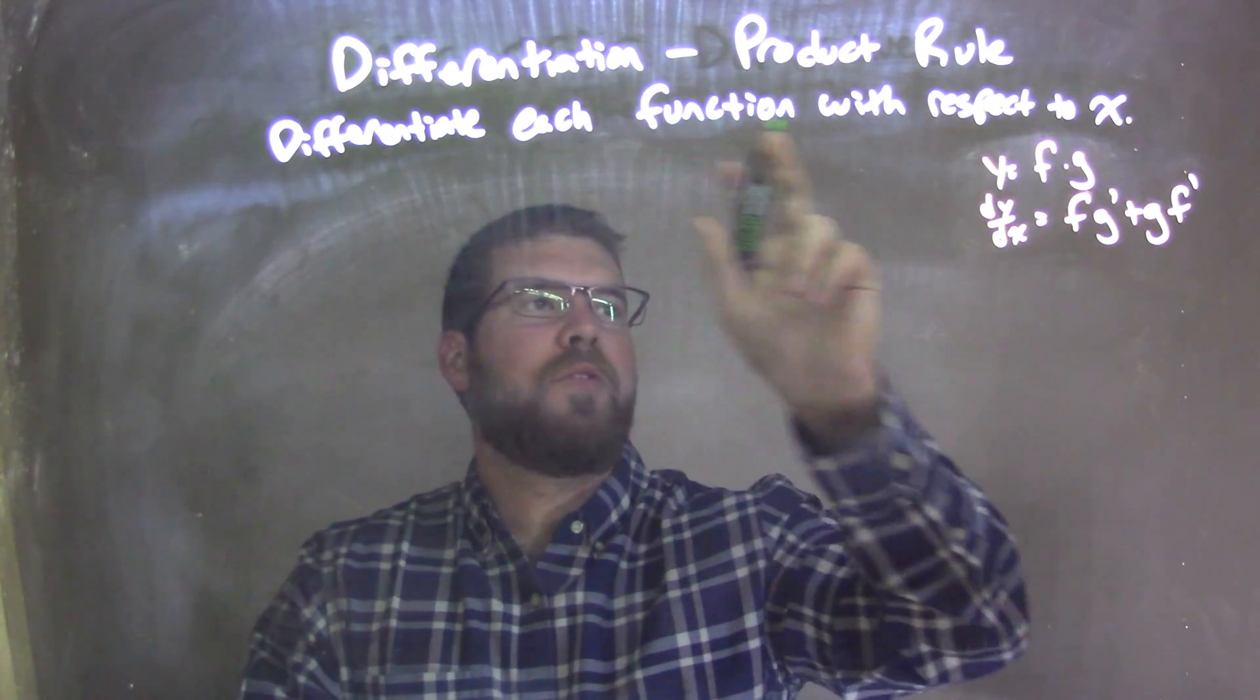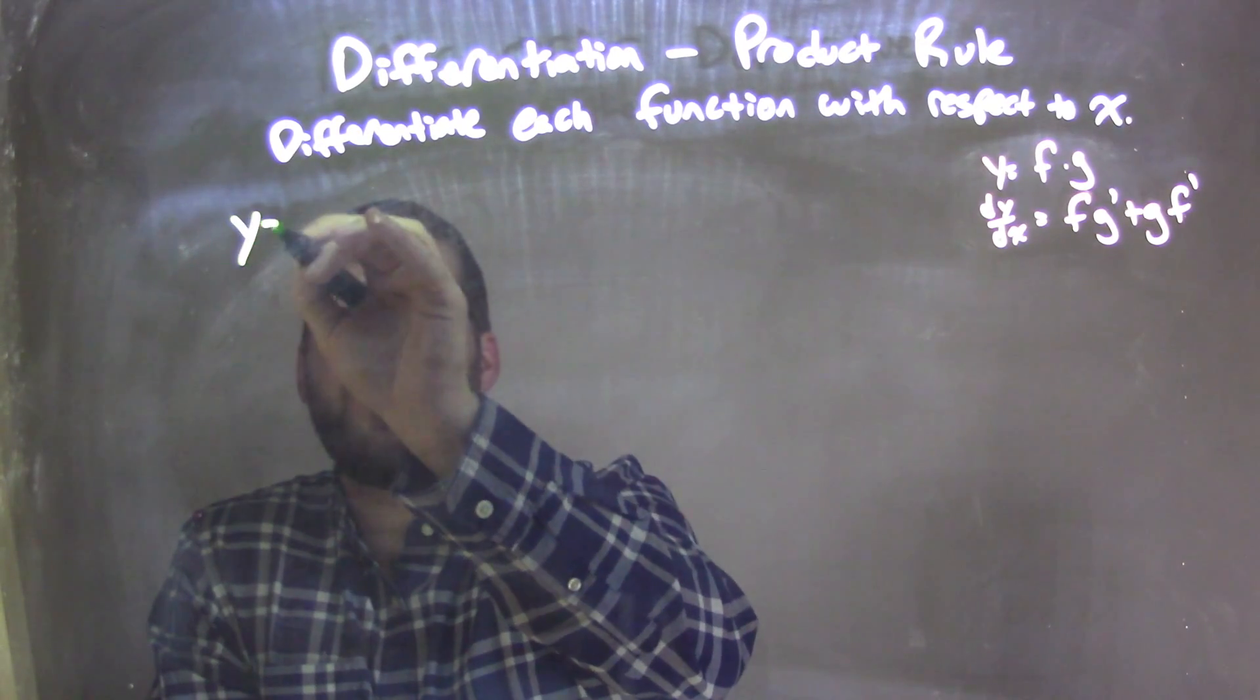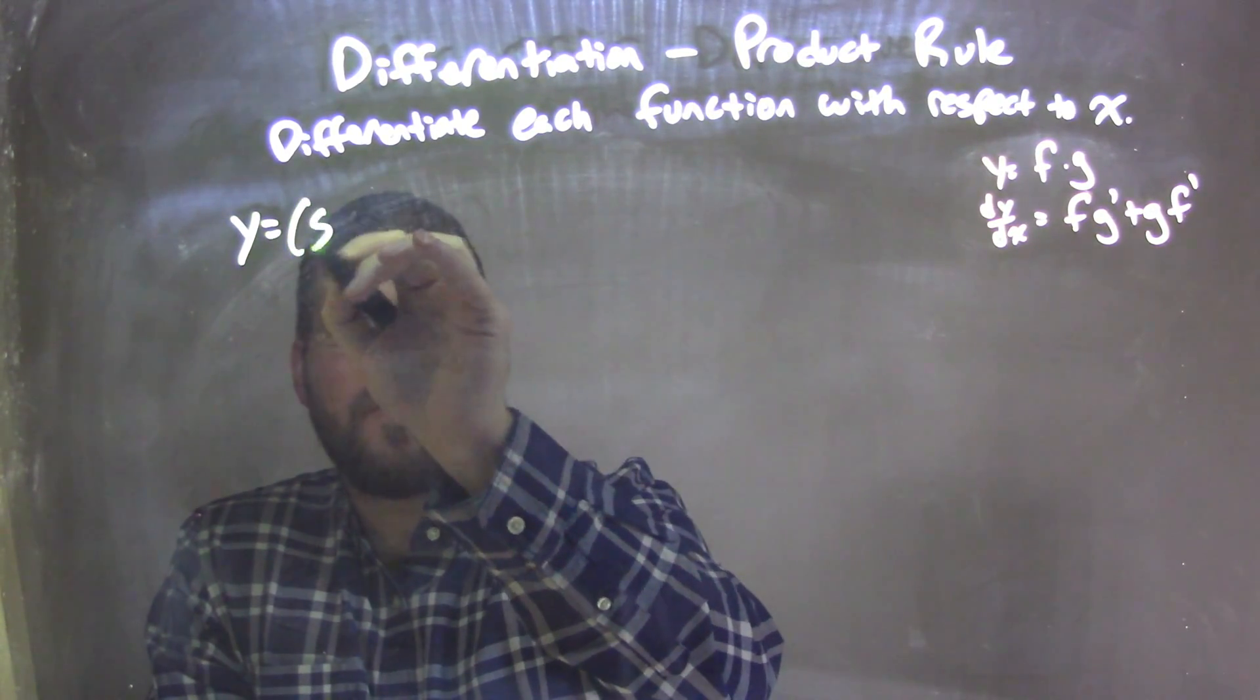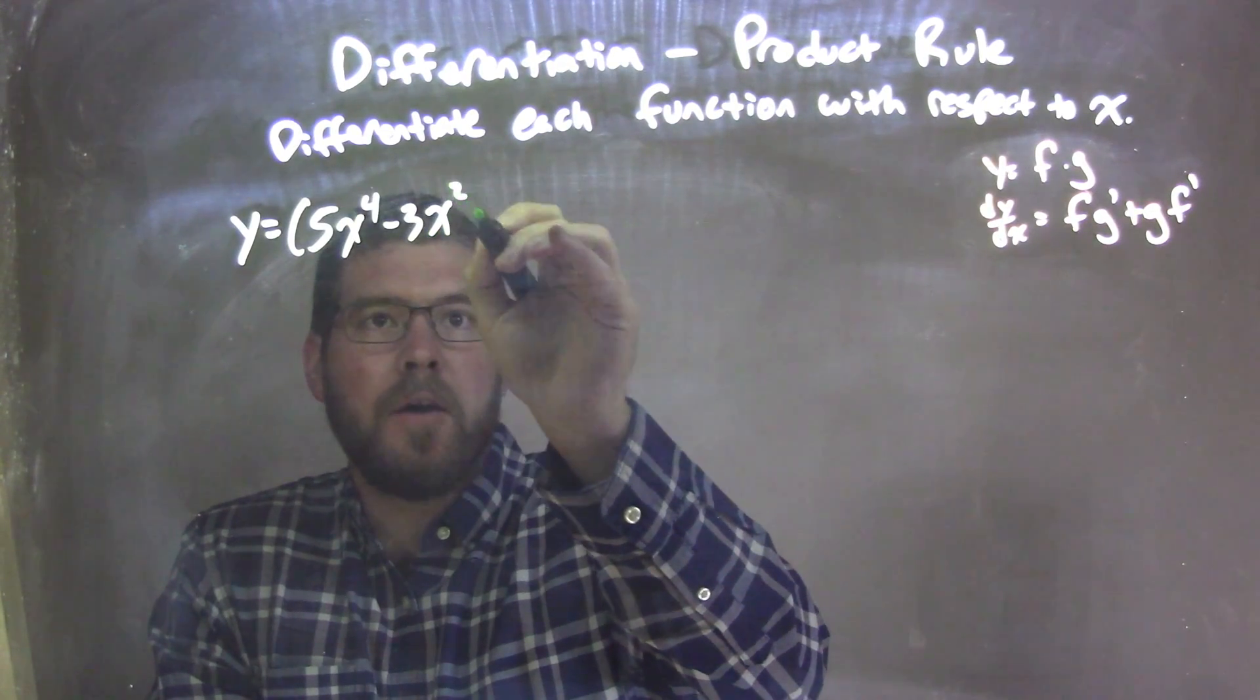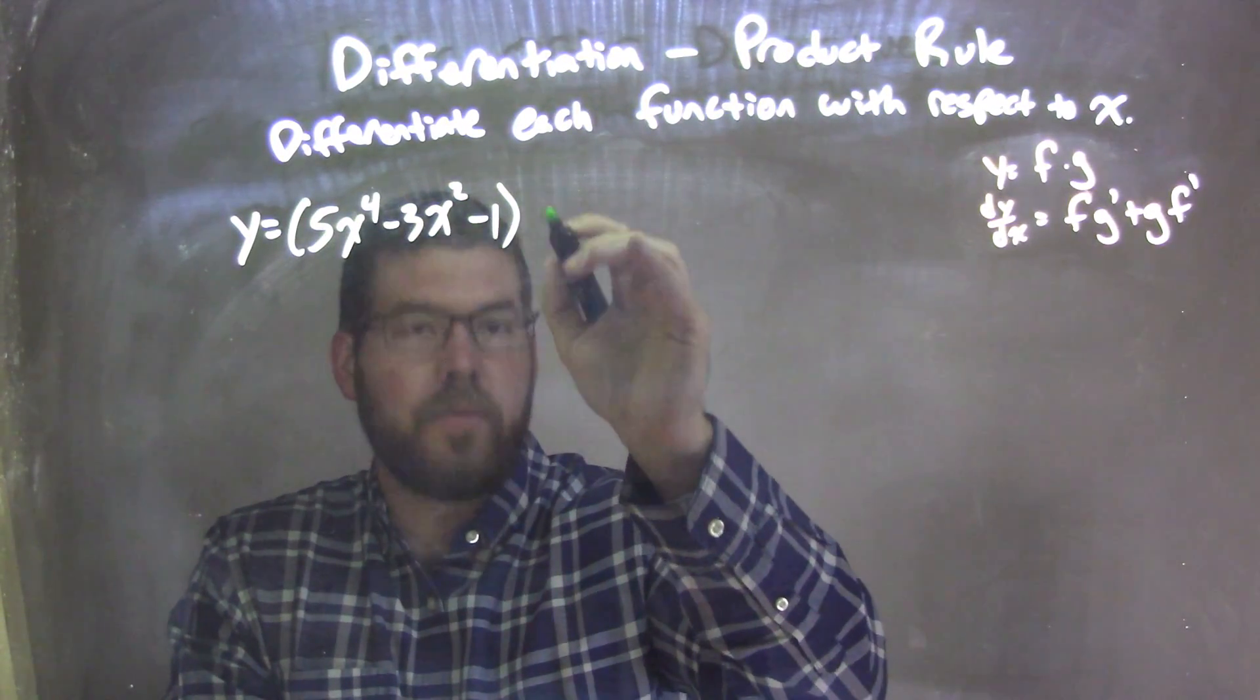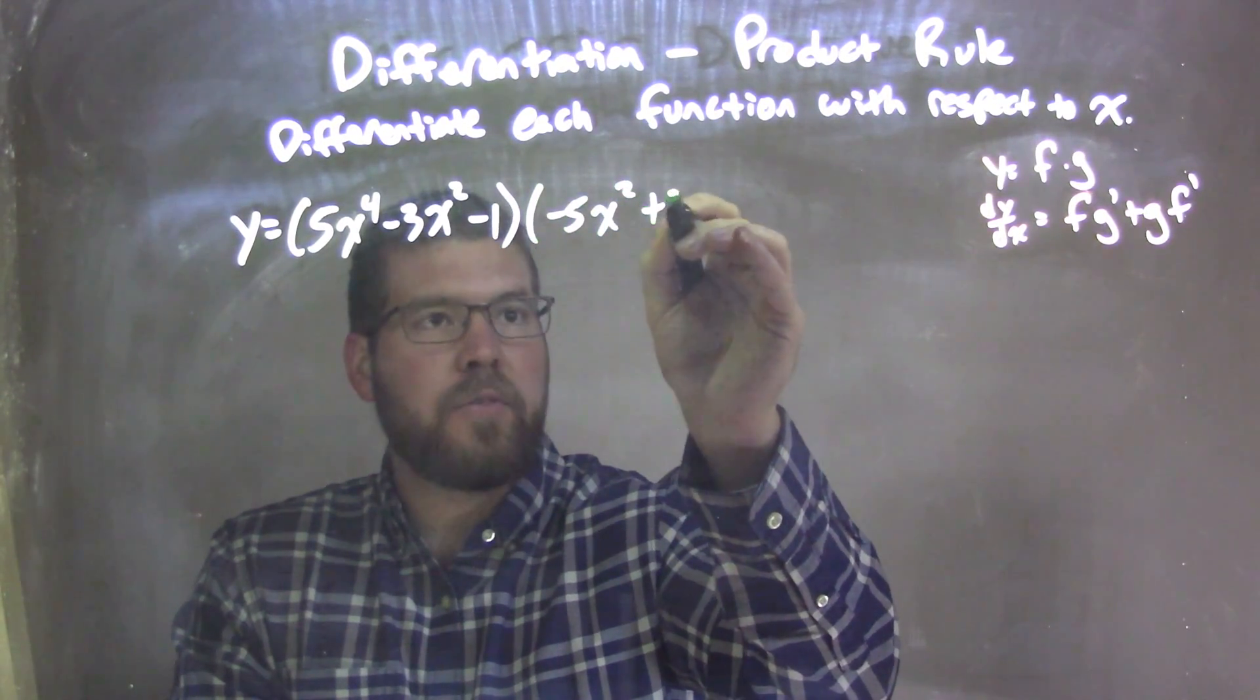We're going to differentiate each function with respect to x. If I was given this function, y equals 5x to the 4th minus 3x squared minus 1 in my first parentheses, second parentheses, negative 5x squared plus 3.